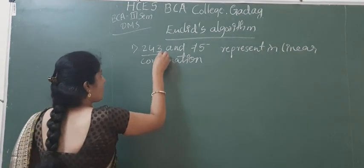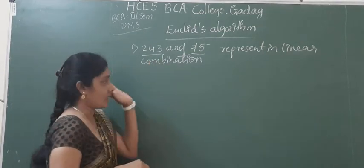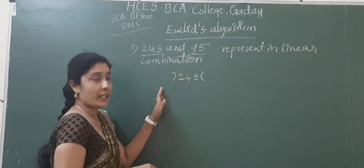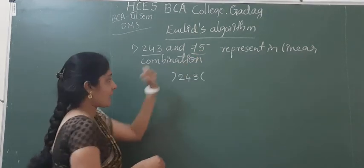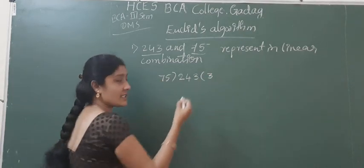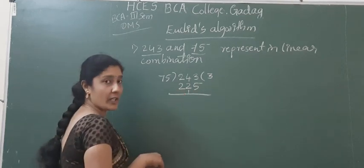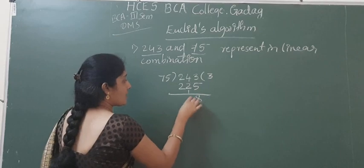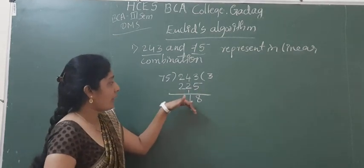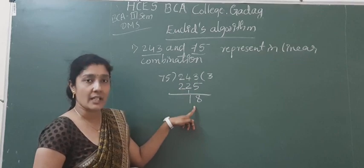Consider 243 and 75. Between these two numbers, which is the largest one? 243. Therefore, consider 243 and divide it by the smaller one, that is 75. So, dividing: 75 threes are 225. Now 243 minus 225 — that is 18. So when you divide 243 by 75, you get the remainder as 18.